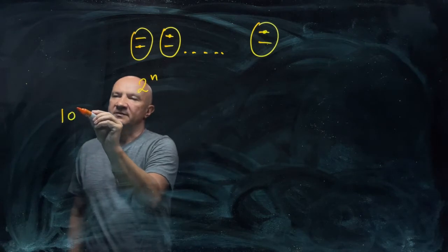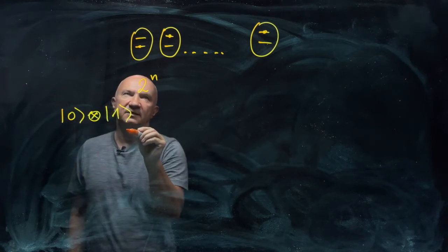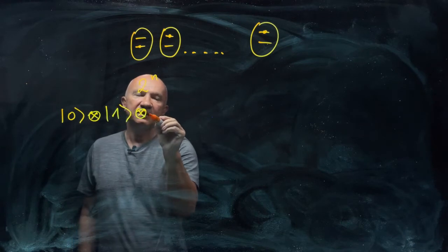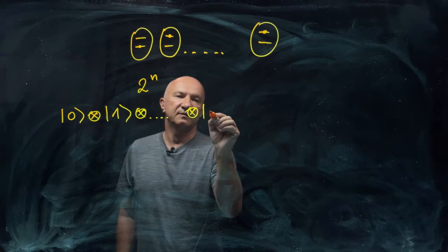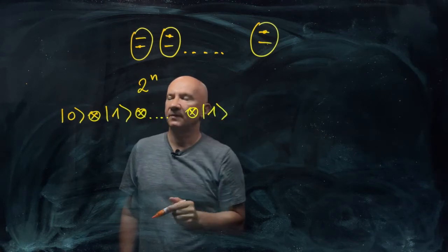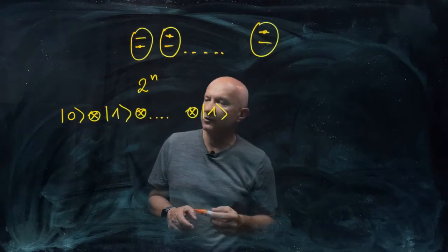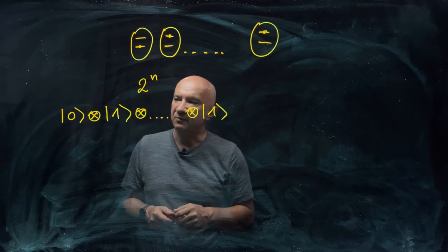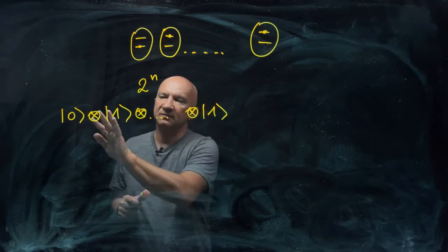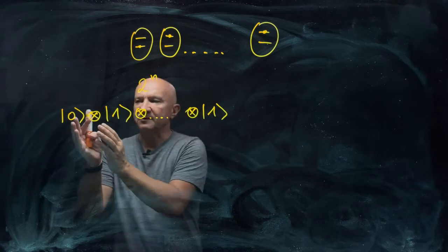So we write this as zero and another one in state one, and another one in whatever, and then, finally, the last one in state one. Now, this symbol here is a symbol for a tensor product that you will see in a moment. Just think about it as a convenient symbol for representing subsystems.